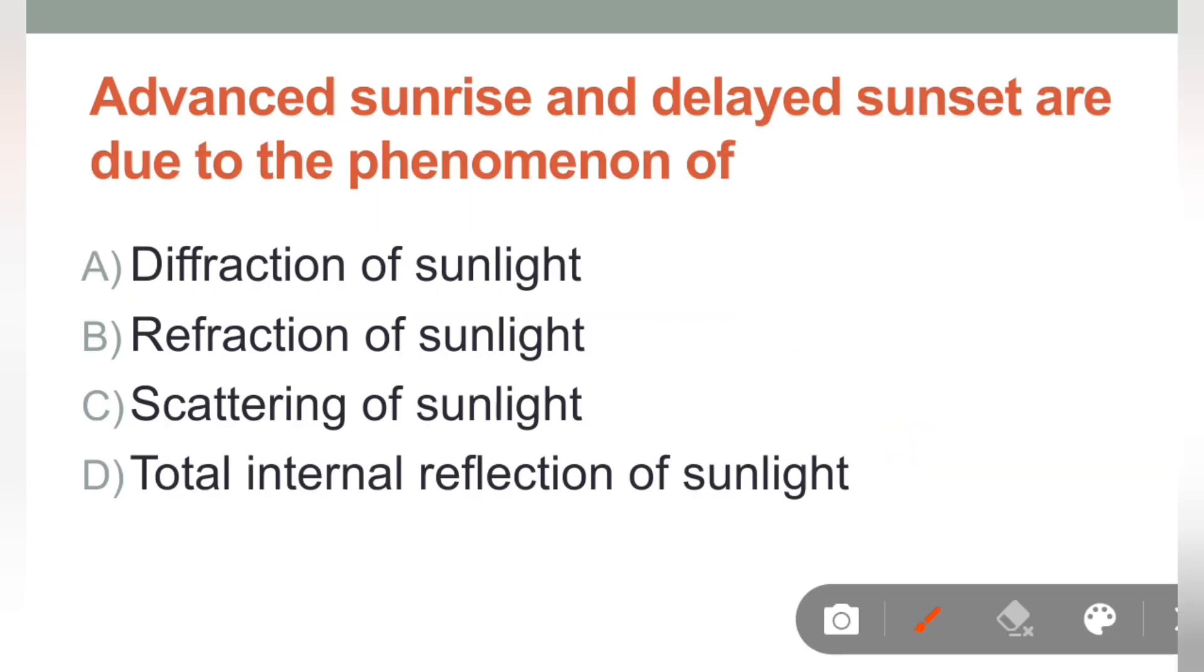Next question is: Advanced sunrise and delayed sunset are due to the phenomena of? In mein se, kis light ke phenomena ki wajah se advanced sunrise, matlab jaldi sunrise hota hai, aur delayed sunset hota hai. Iska jo correct answer hai, that is refraction of light. As you know, refraction is the bending of light, where light travels from one medium to another. It bends towards or away from the normal.